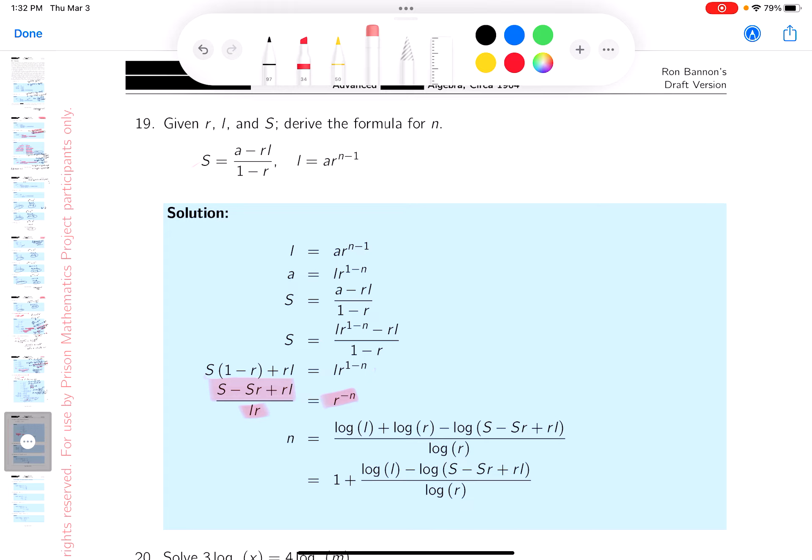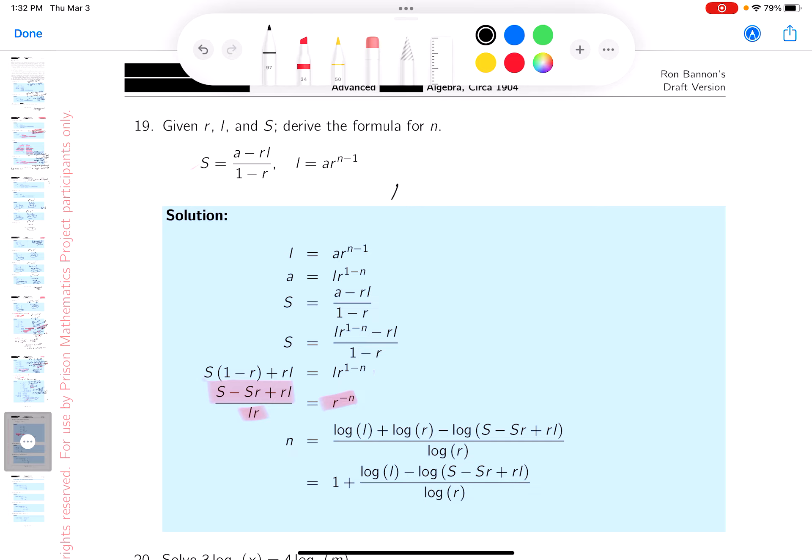The next thing I'll do is take the log of both sides. And if you do that, I'll write this down for you. And again, I would do this on paper. I would say, oh, log of (S minus Sr plus rl) minus the log of rl, or lr, doesn't really matter, r equals minus n times the log of r.